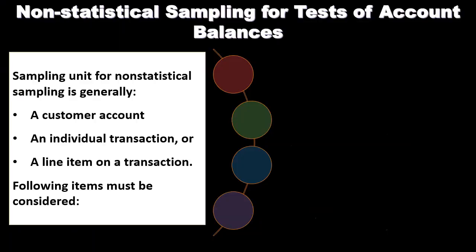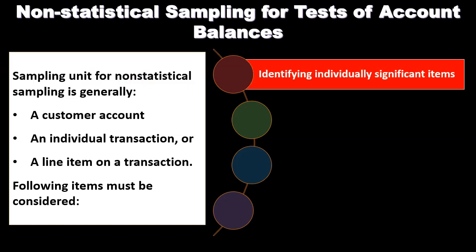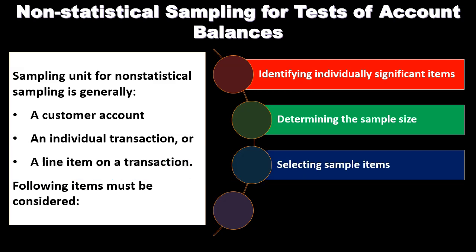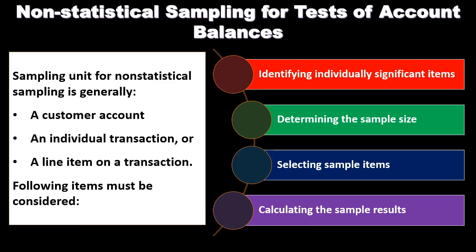The sampling unit for non-statistical sampling is generally a customer account, an individual transaction, or a line item on a transaction. The following items must be considered: identify individually significant items, determining the sample size, selecting sample items, and calculating the sample results. We'll address some of these items in more detail now.